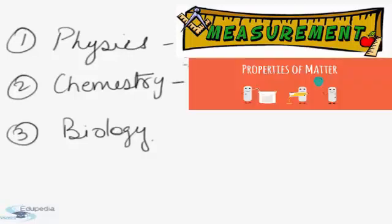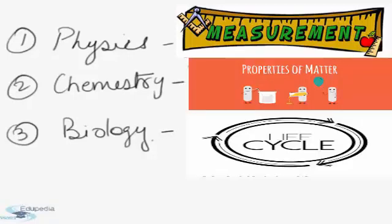In physics you'll be studying study of measurements, in chemistry you'll be studying properties of matter, and in biology you'll be studying study of life cycles. We'll be studying chemistry in detail.